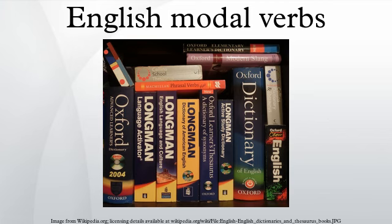Double modals: in formal standard English usage, more than one modal verb is not used consecutively, as modals are followed by an infinitive, which they themselves lack. They can only be combined with non-modal constructions that have a modal function, such as 'have to' — which in spite of its function is not a modal verb. Thus 'might have to' is acceptable, but 'might must' is not, even though 'must' and 'have to' can normally be used interchangeably. A greater variety of double modals appears in some regional dialects. In Southern American English, for example, phrases such as 'might could', 'may can', or 'ought to should' are sometimes used. The double modal may sometimes be redundant, as in 'I ought to should do something about it', where 'ought to' and 'should' are synonymous.